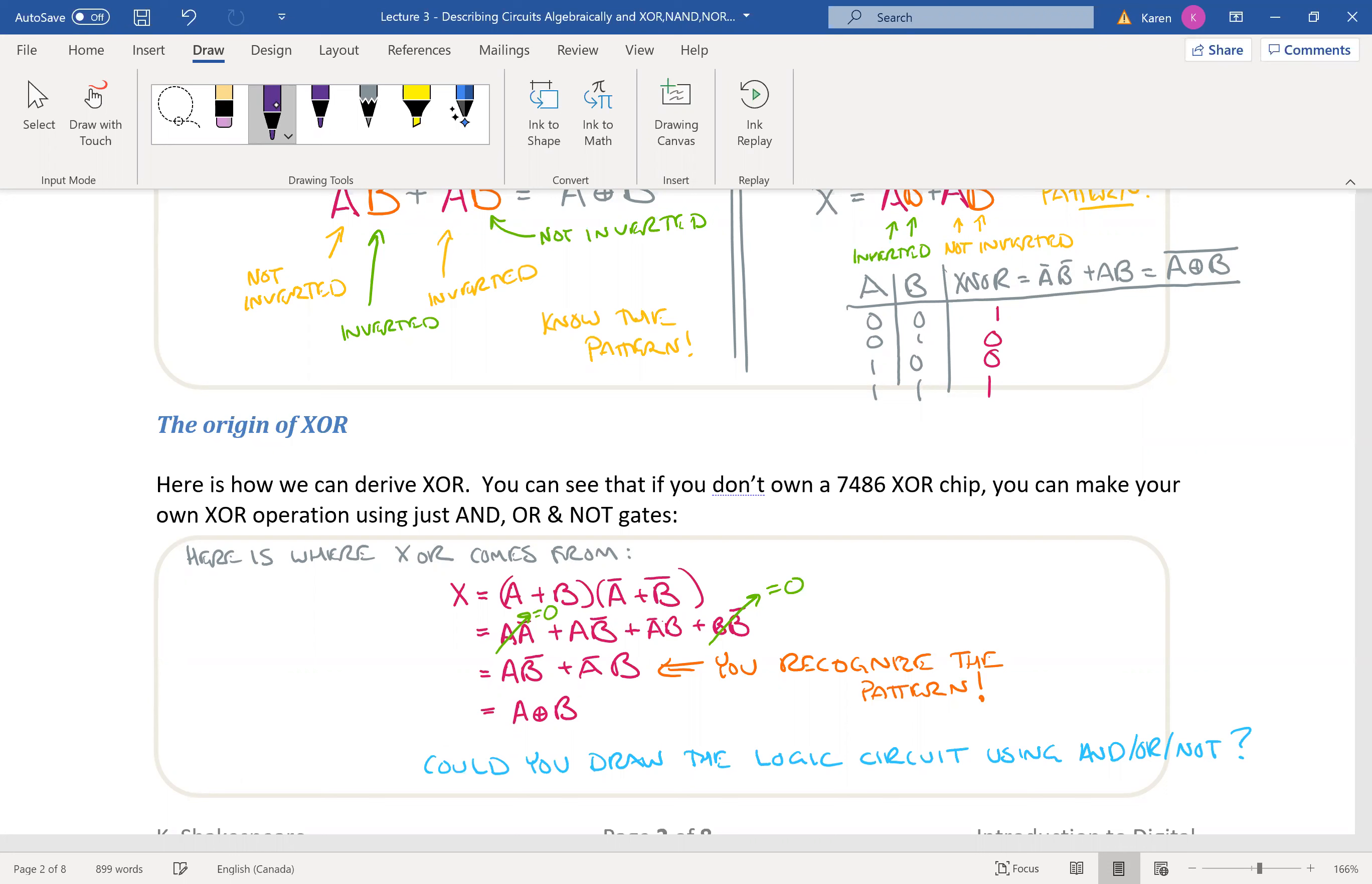Then you would get the exclusive OR chip and you would invert it. So very, very important common combination of basic gates called exclusive OR and then the inverse of it, exclusive NOR.